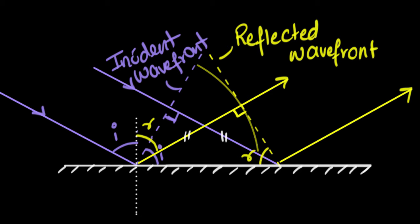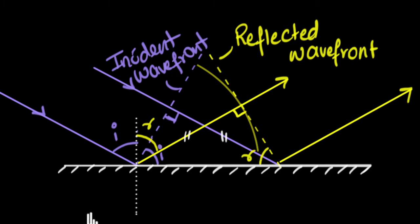Victory for Huygens! In short, from Huygens' principle, because the reflected wave has the same speed as the incident wave, that's the reason the two angles are equal to each other. Now you can stretch this and guess that in refraction that's not true, because the waves don't have the same speed in different media — and that's why the angle of incidence is not equal to the angle of refraction. But that's something we will talk about in a separate video.